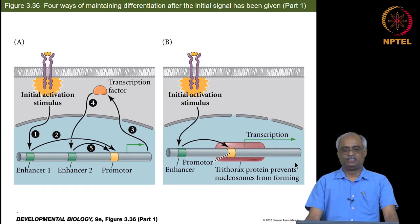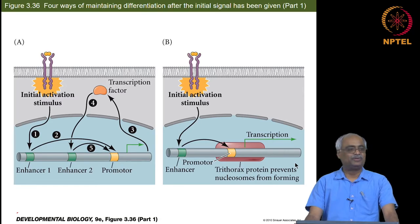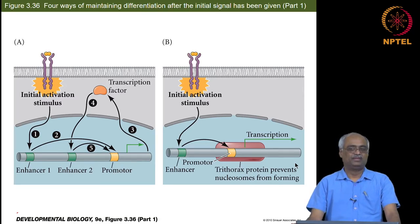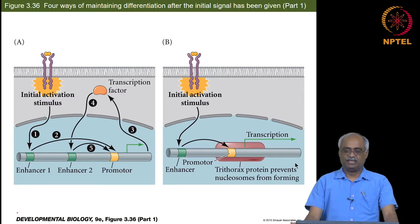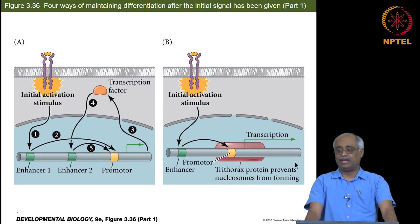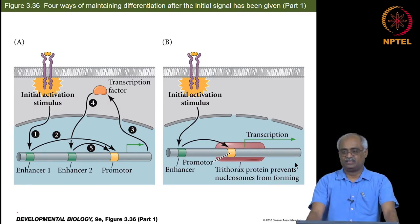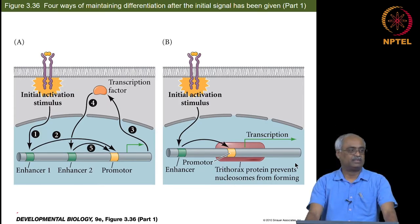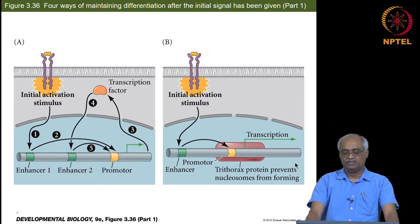There are situations where the activated state needs to be maintained without continuous signalling, because a particular differentiated cell type is marked by expression of a certain set of genes. If those expressions do not happen, you will not have the differentiated state. So how do you maintain that state of transcription — either on or off — is what we are going to look at in the next couple of slides.